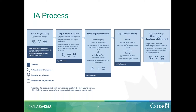The technical guide lays out not just the legislative commitments but also the policy and regulatory commitments needed to fully implement this proposed system. The five steps are: early planning, impact statement by the proponent, impact assessment led by the agency or a review panel, decision-making, and follow-up and monitoring. Public participation, cooperation with other jurisdictions, and engagement with Indigenous peoples are collaborative models that run through all steps in the process.